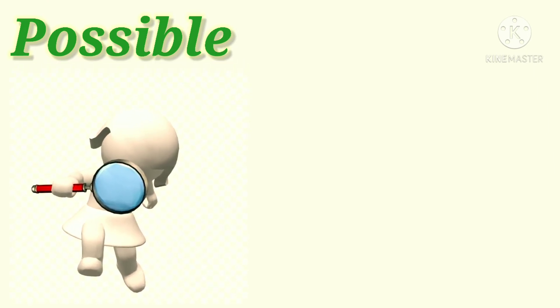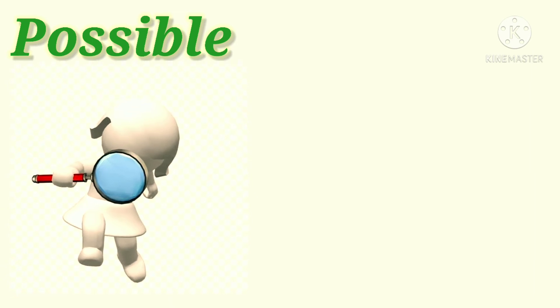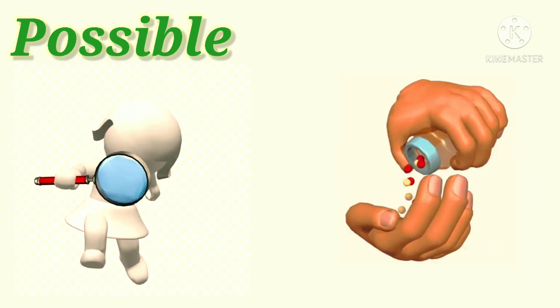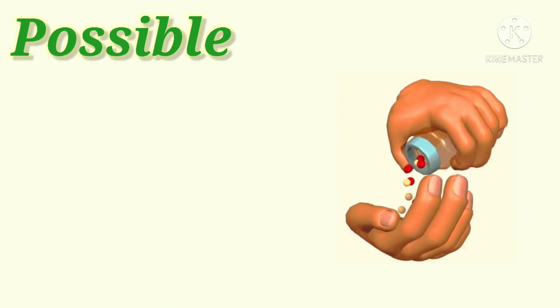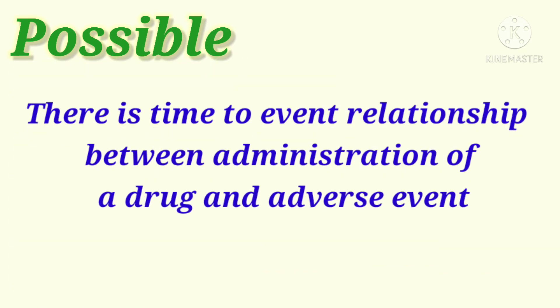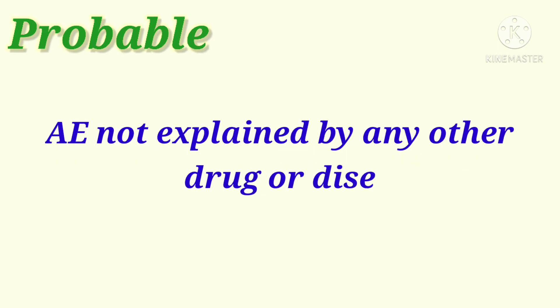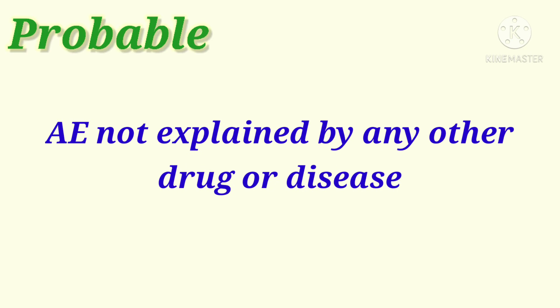Next is possible. If there is data to show that an adverse event occurred after taking the drug, and whatever adverse event occurred is pharmacologically plausible, then we characterize it as possible. Next is probable. If an adverse event has occurred but cannot be explained by any underlying disease or concomitant drug, then we consider it as probable.